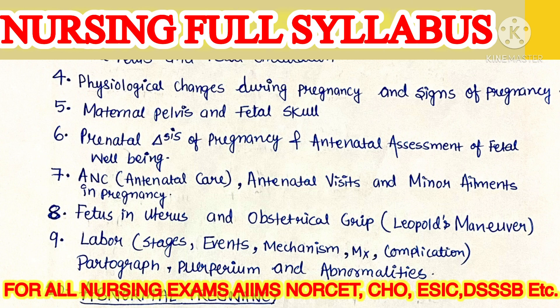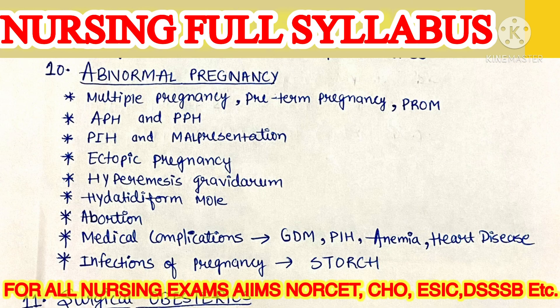Labor में — stages क्या हैं, events क्या हैं, mechanism of labor, management, complications, और partograph — ये सब important topics हैं। Perineum and its abnormalities भी cover करना है। Next: abnormal pregnancy — like multiple pregnancy। ये selected topics हैं — हमें competition clear करना है, exam fight करना है, इसलिए selected topics करके जाना है।